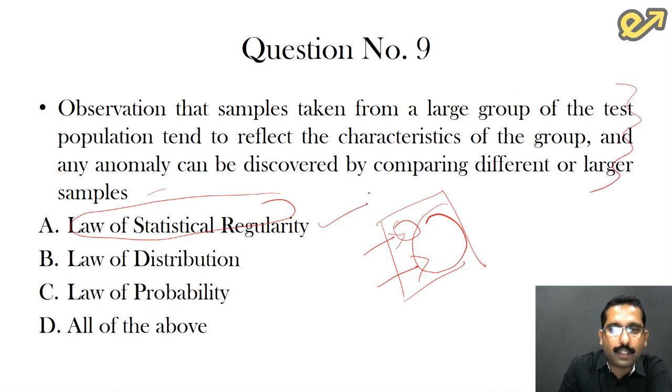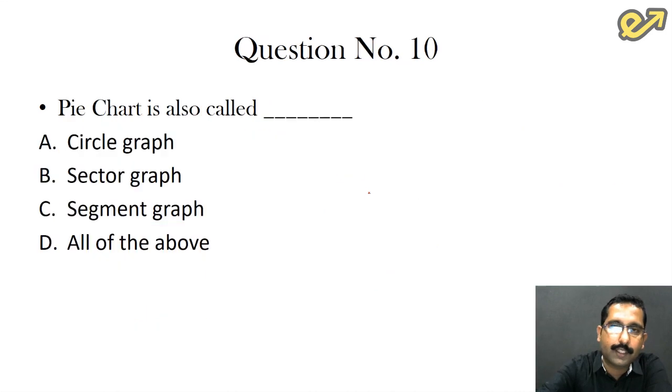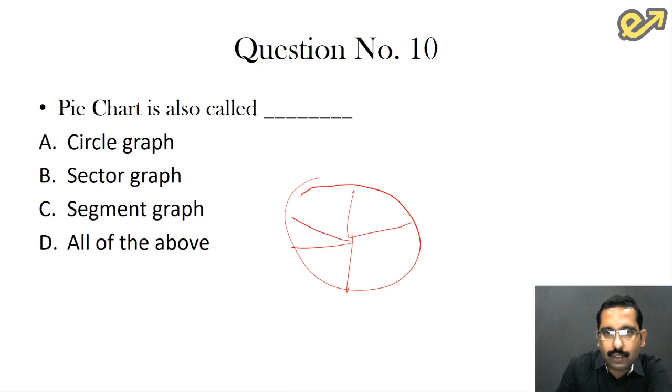The last question in this series: pie chart is also called? This is how a pie chart looks. There is a circle here and we will have different segments. The answer for this is circle graph. Pie chart is also called circle graph.